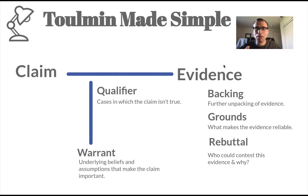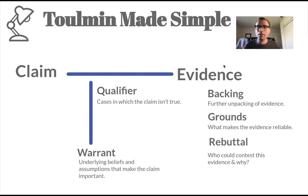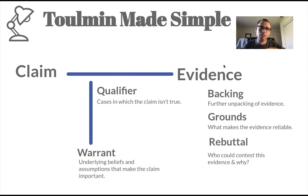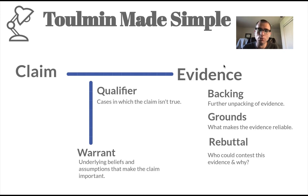So that's probably as much of the argument as you would just know by guessing, right? You know that there has to be a claim and there has to be evidence. But what about some of these other terms that we see on the page? The first one I want to start with is warrant — underlying beliefs and assumptions that make the claim important, that connect the evidence and the claim together.